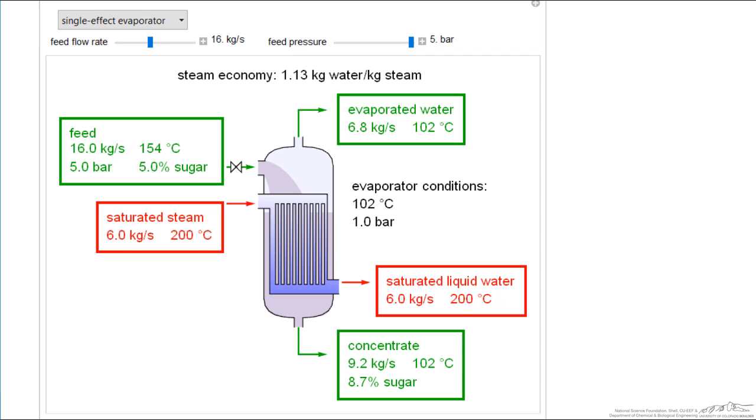You'll notice the efficiency is slightly greater than one. This is because heat of vaporization is a function of temperature or saturation pressure. The feed stream at 154°C has different heat of vaporization than the saturated steam at 200°C. We use mass and energy balances to calculate the differences for these multiple effect evaporators, showing we can utilize energy better with additional effects.